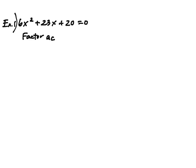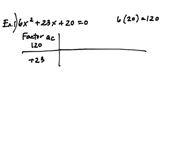So I have the factor of AC. What is A? 6. And what's C? 20. So that equals 120. So I need to find the factor of 120. They need to equal plus 23 or B.